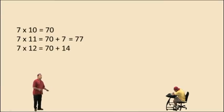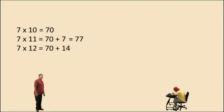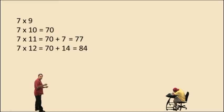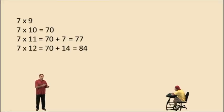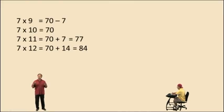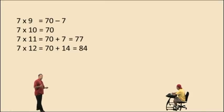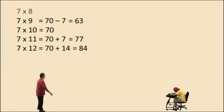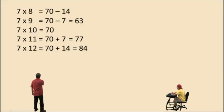Seven times twelve — well, if seven times ten is seventy and we want seven times twelve, we just have to add two more sevens, and that gives us seventy plus fourteen, which is eighty-four. Now the pattern works with subtraction too. If we want seven times nine — well, if seven times ten is seventy, that's ten of those sevens being added up, then seven times nine only adds nine of those sevens. So we need to take away a seven from seventy: seven times nine is seventy take away one seven, which gives us sixty-three. And seven times eight — we take away two sevens and we get fifty-six.